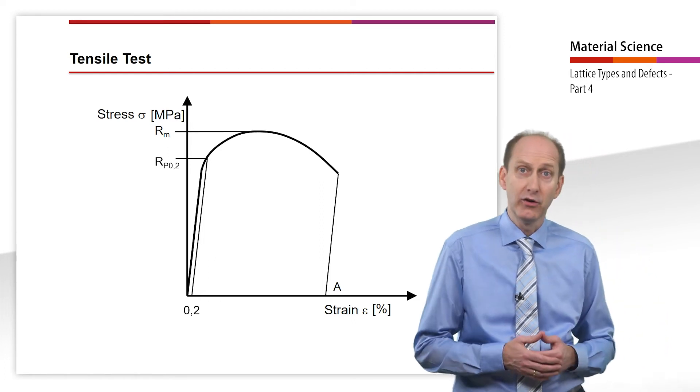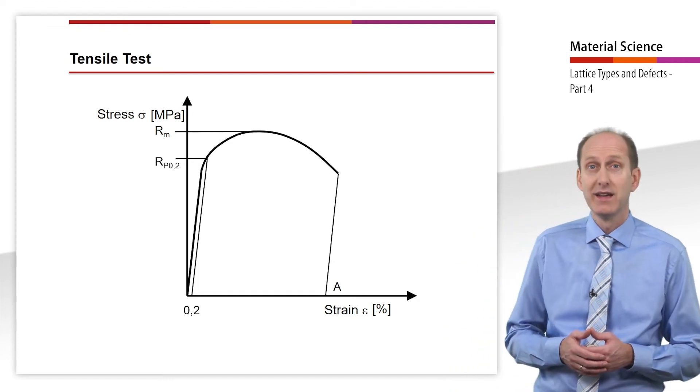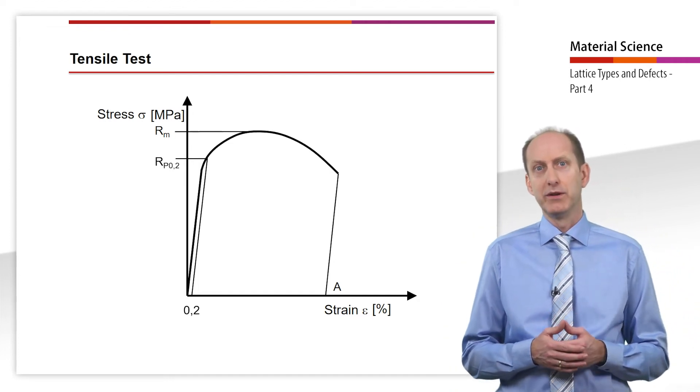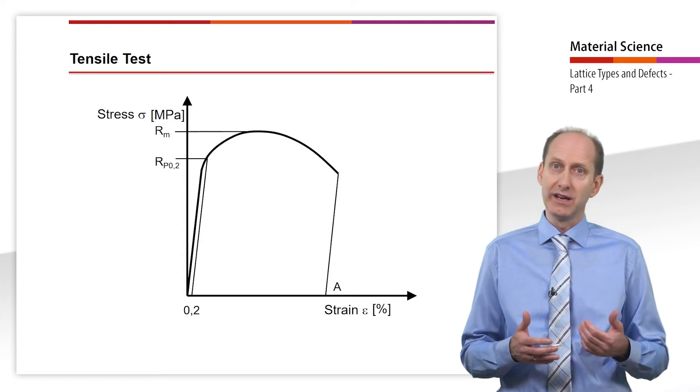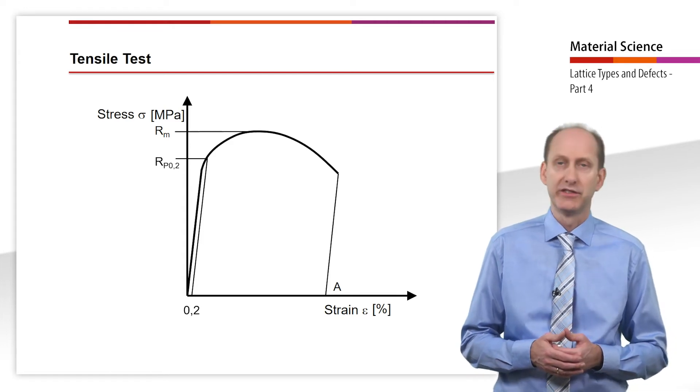To determine the elongation at break A, the broken sample is put back together precisely. Based on the original length, the elongation percentage is then determined.